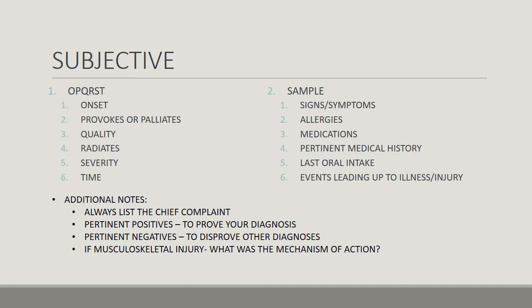Always list your chief complaint. For a musculoskeletal injury, you have to ask about the mechanism of action — people forget that all the time. How did it happen? What were you doing? For example, 'I was running and stepped off the curb and felt pain on the lateral side of my ankle.' Knowing you inverted your ankle really helps you know what you're looking for. Always ask how it happened.